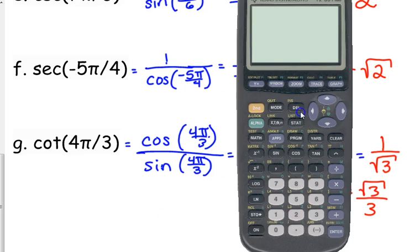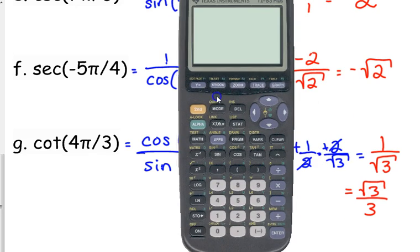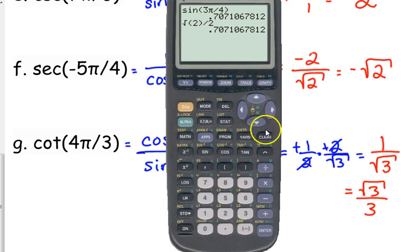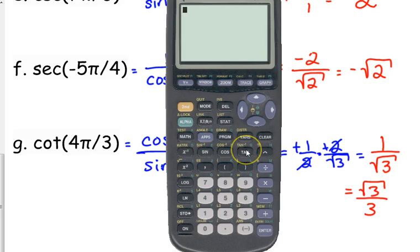And let me show you one more time how to confirm this in the calculator. If you've got cotangent, cosecant, secant, you have to know that they are the reciprocals, because you don't have those buttons on your calculator, and it's not the inverse.